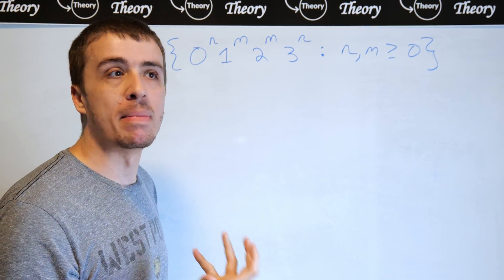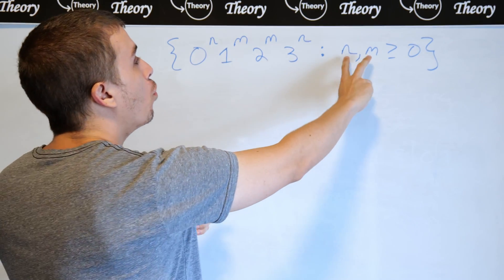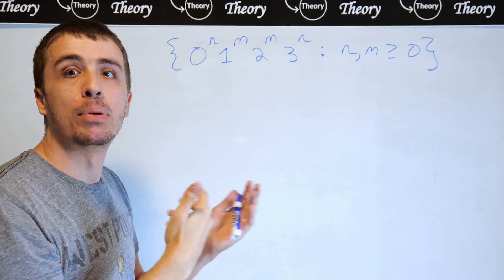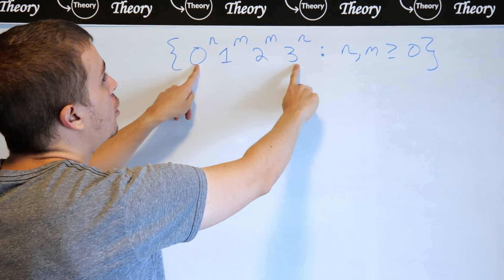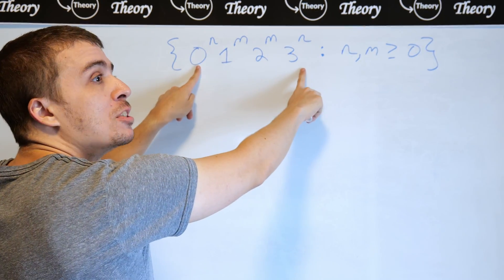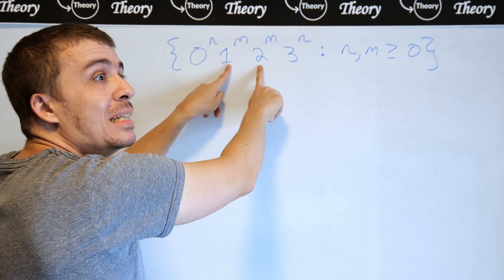Another thing that you should be aware of when making a context-free grammar is where are counts of the variables located? So one thing we should be aware of right here in this language is that the n's are on the outside and the m's are on the inside.